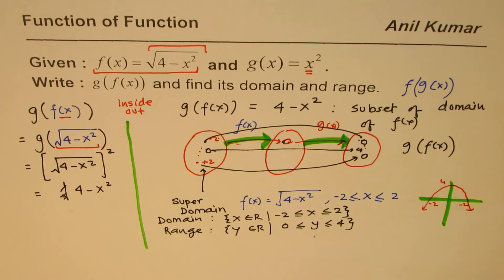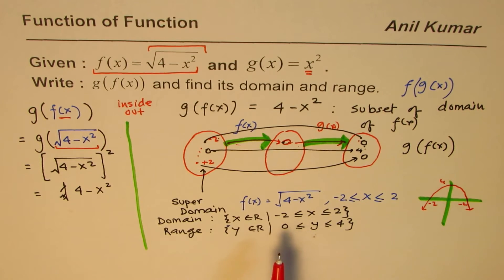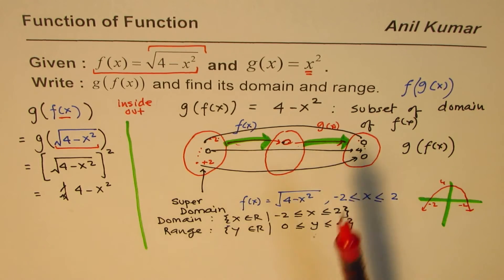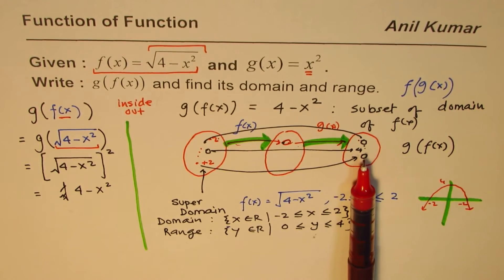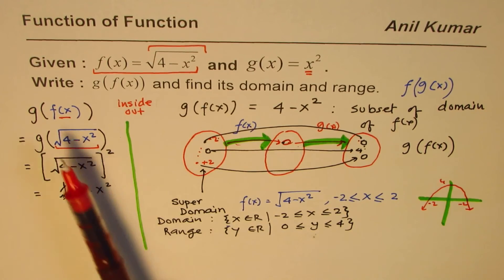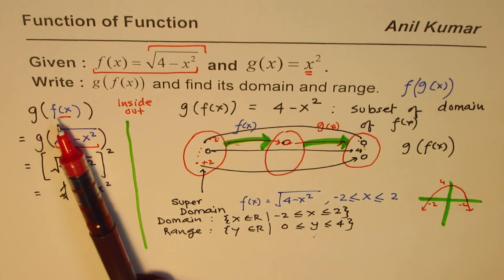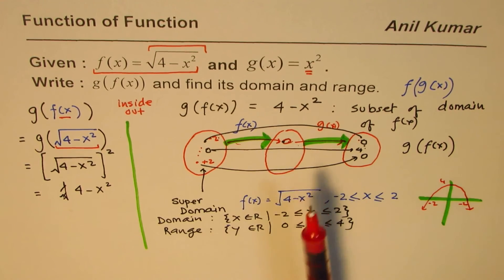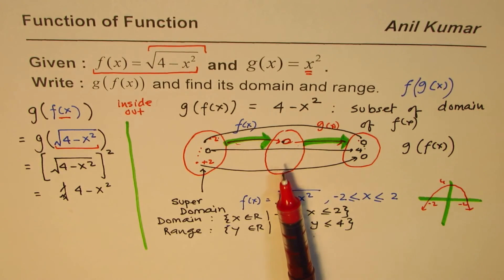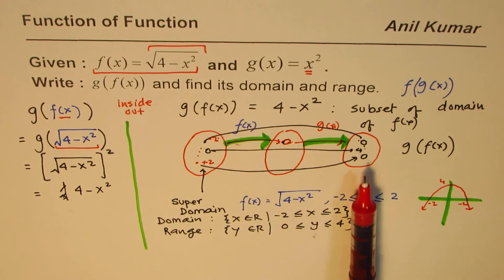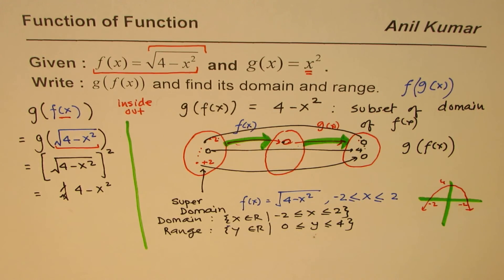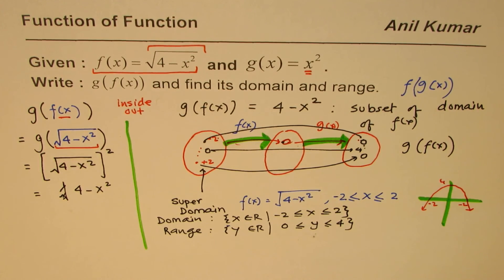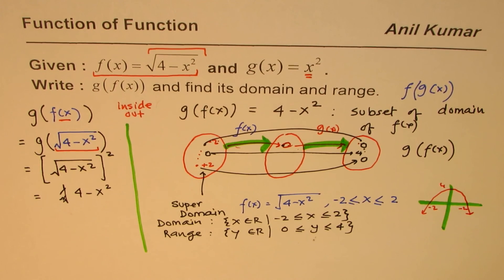I hope you find it interesting and useful. When we have composition of functions, the domain is to be decided as a subset of the domain of the inside function, and the range is decided by the outside function for the restricted domain. For the restricted inputs, we have the range. This is a very interesting example and I hope it helps you understand all these concepts. I'm Anil Kumar. You can always share and subscribe to my videos. Thank you and all the best.